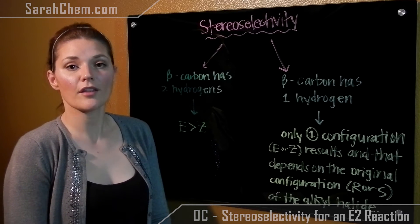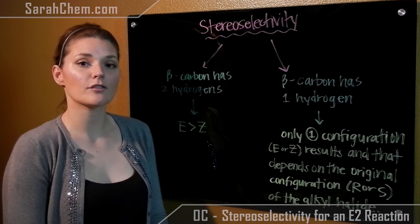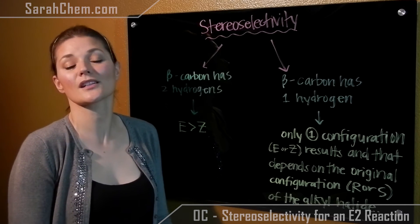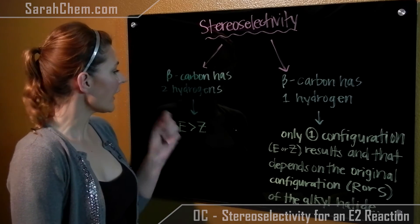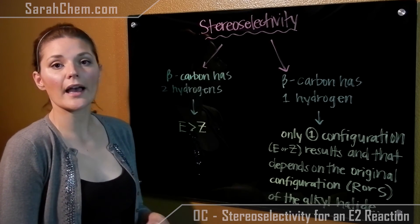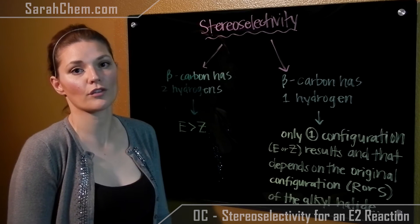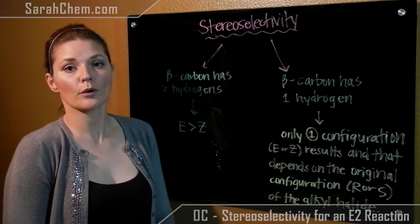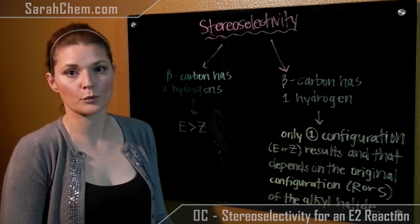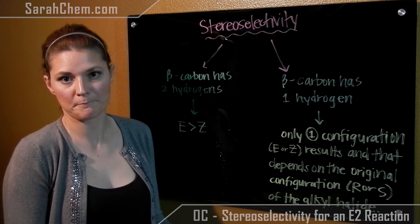If you do, then you're going to look at that beta carbon and decide: does it have two hydrogens attached to it, or does it only have one? In the case where it has two hydrogens attached to it, you will have the major product have the E configuration over the Z. Remember, E is more stable because it keeps the bulkiest groups as far away from each other as they possibly can be.